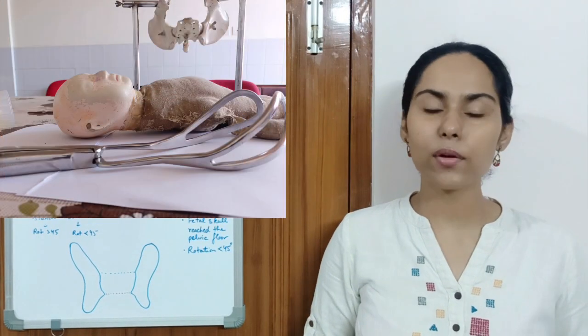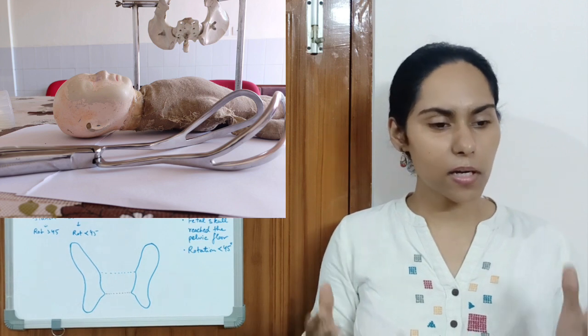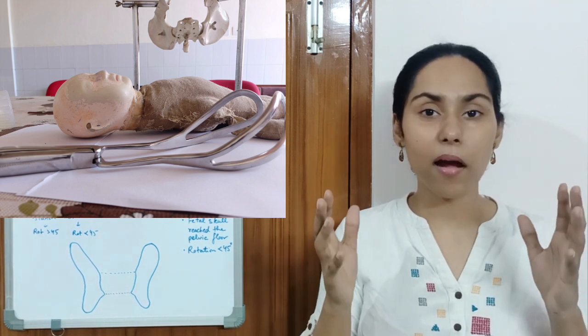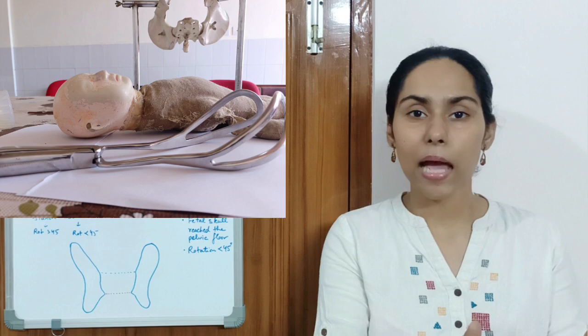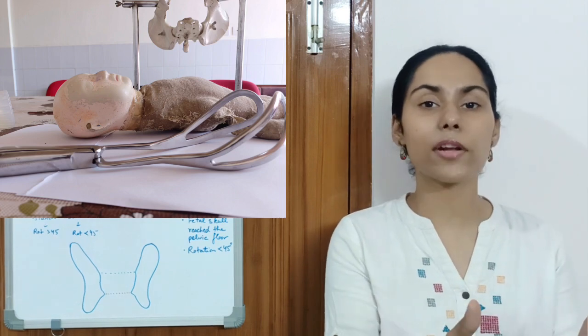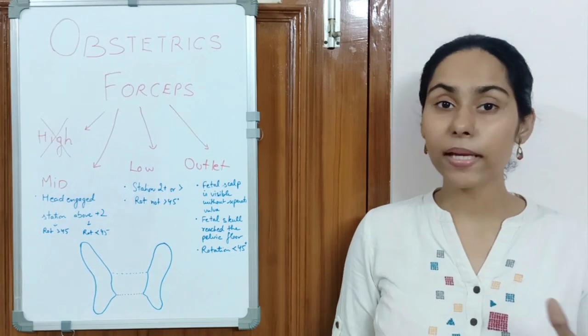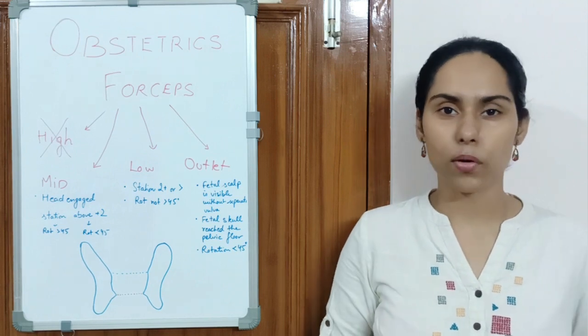The obstetric forceps are made of stainless steel. Basically two blades that are applied on the fetal head and they help in easily delivering the fetal head out of the vaginal canal. There are mainly four types of obstetric forceps.